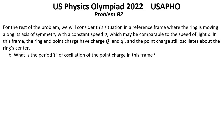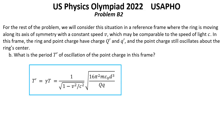Solution for Question B: What is the period T' of oscillation of the point charge in this frame? By directly applying time dilation to the answer of part A, we have T' = γT = T / √(1 − V²/C²) multiplied by the answer from the previous question.